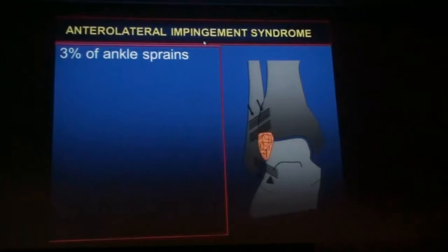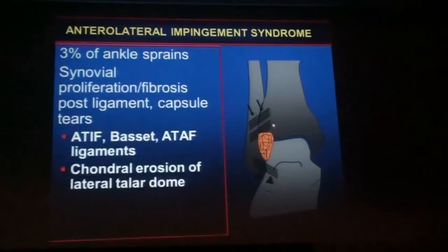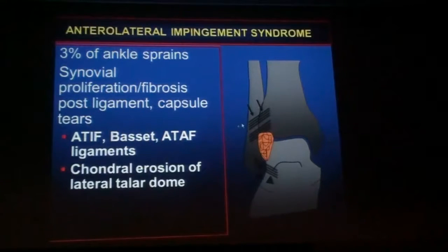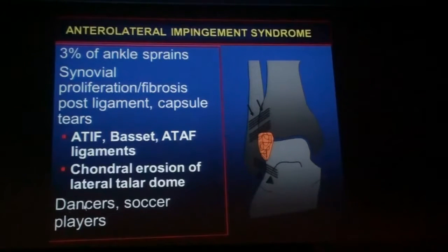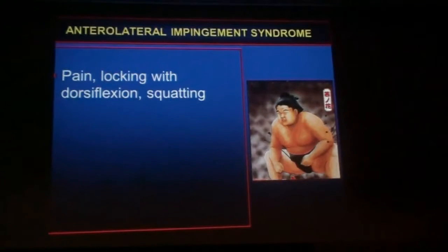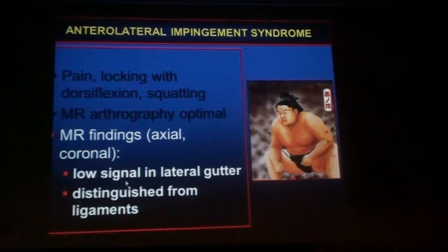Moving away from anterior and anteromedial impingement, we go to anterolateral impingement. That is only a soft tissue impingement, so usually you won't see it on X-ray. It is secondary to ankle sprains. Basically, you get synovial thickening and scarring either of the syndesmotic ligaments or of the collateral ligaments, with synovial proliferation in that area. It can be seen in athletes — especially dancers and soccer players. Patients complain of pain and locking with dorsiflexion. The soft tissue structure can herniate into the lateral gutter, impinging in and out and preventing full dorsiflexion.